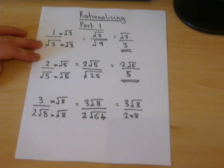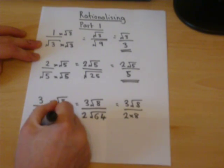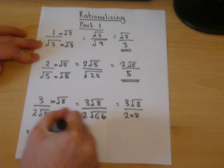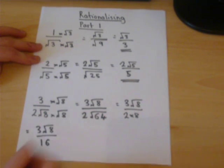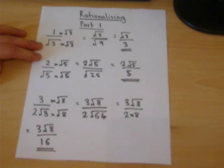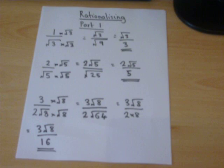This goes a bit further. It's 3 root 8, but the 2 times 8 is 16. And that's a pretty good answer for this question. But if you're going for the A star, you can go a step further.